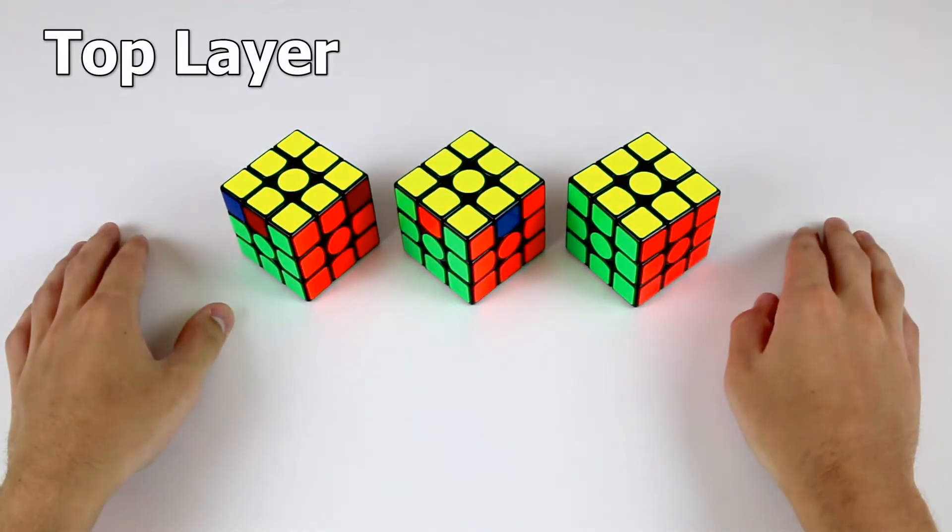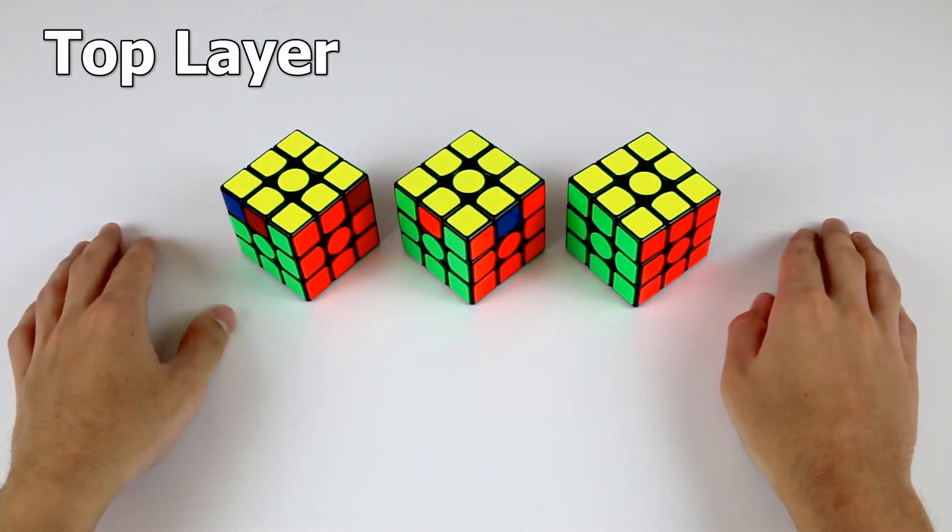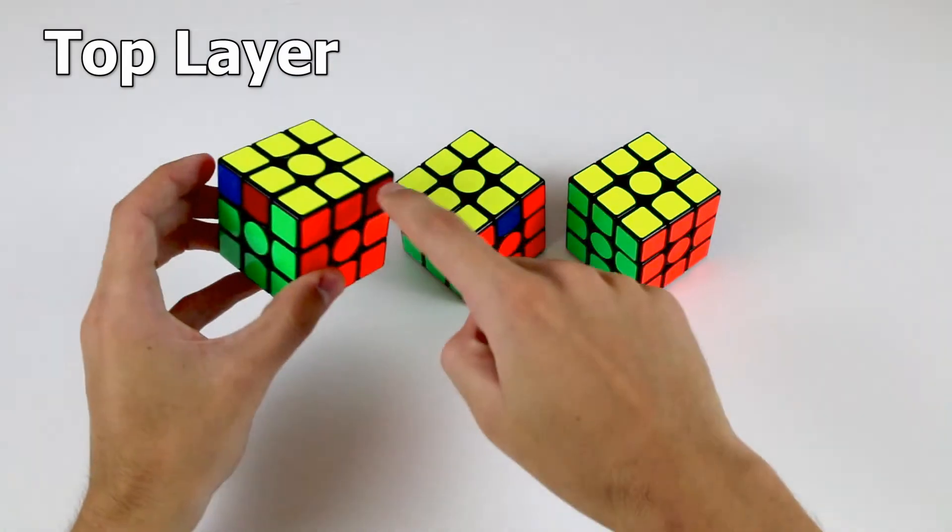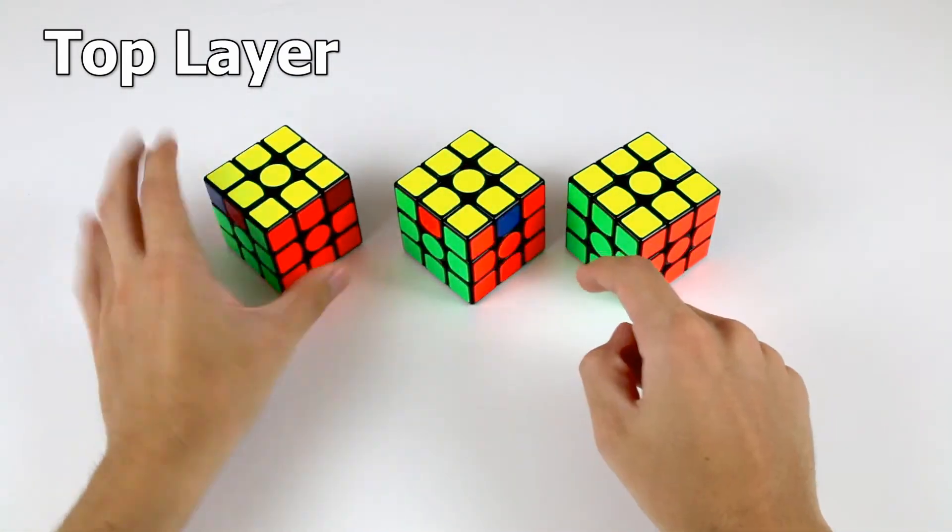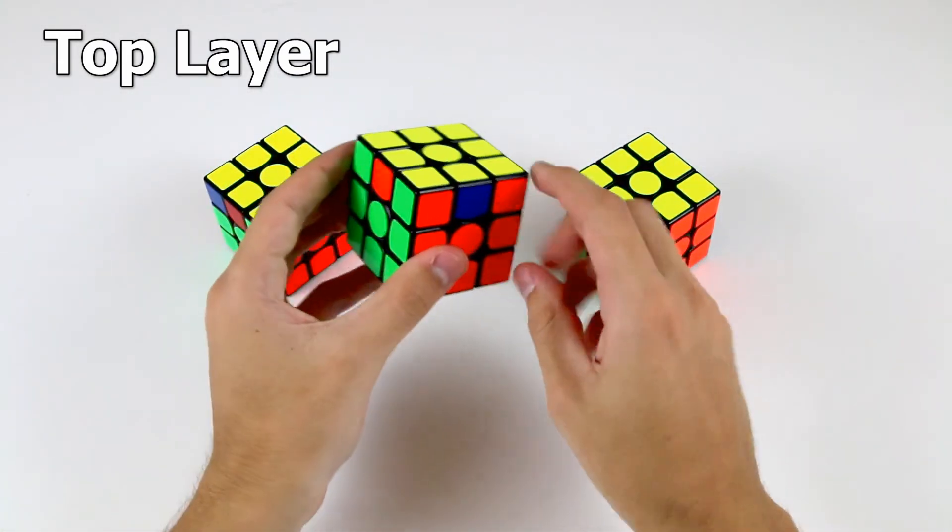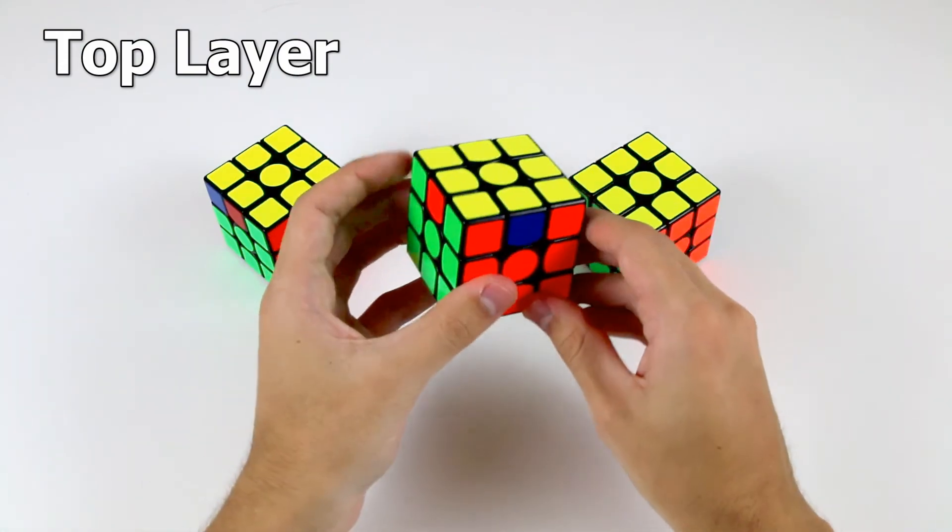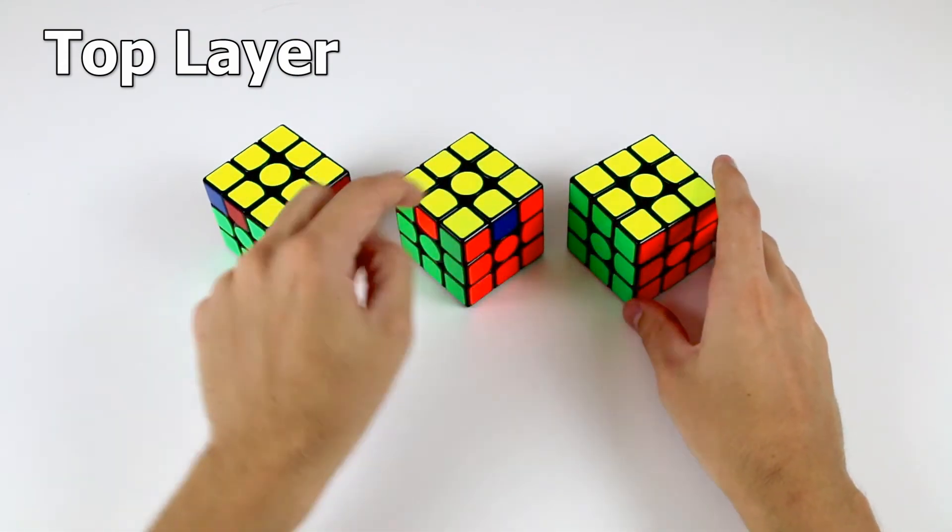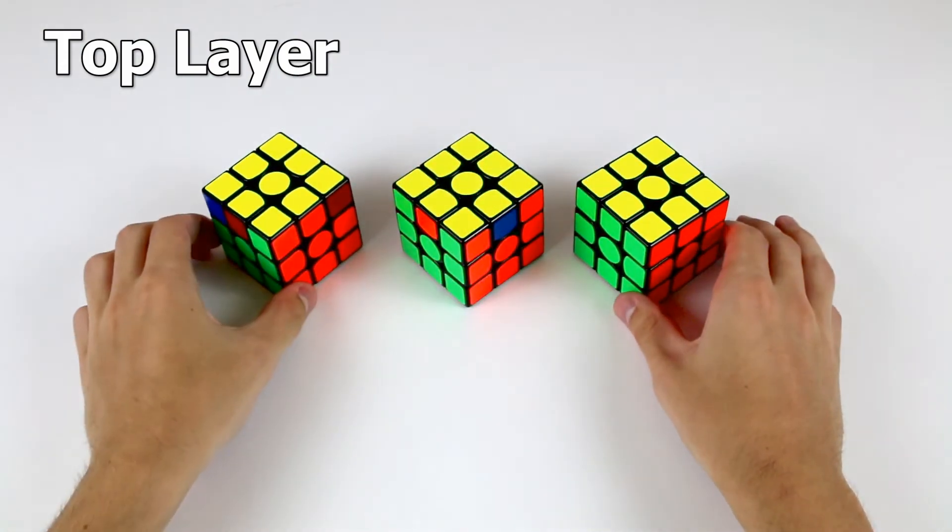Once we've oriented our pieces on the top layer, the last two steps involve solving firstly the corner pieces of our top layer, so that our cube looks something like this, and then we see that we only have the edge pieces left to solve. So what we do is we solve those edge pieces.